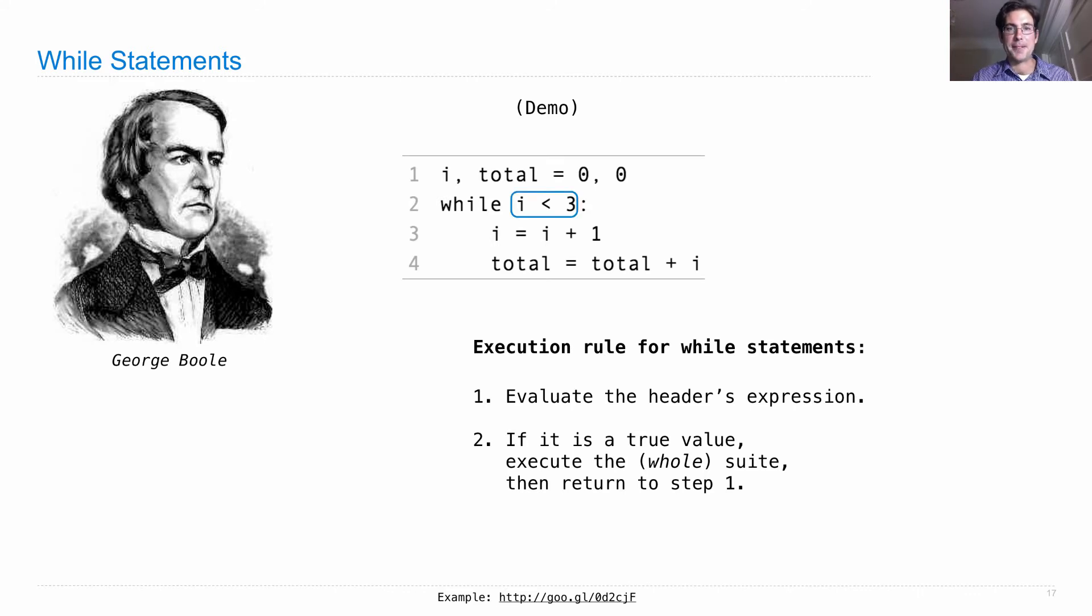Let's execute the thing step by step. We start at the top, executing i, total = 0, 0, which gives us this global frame. The next thing we do is evaluate i less than 3. i is 0, which is less than 3, so since it's a true value we execute the whole suite.